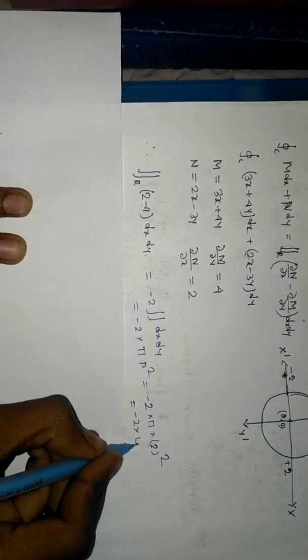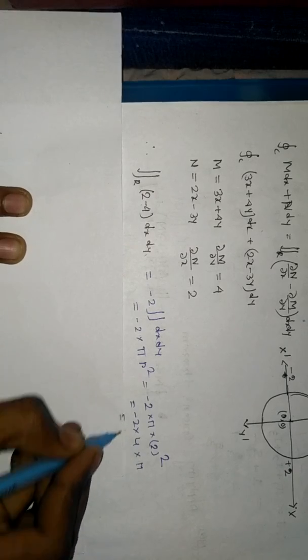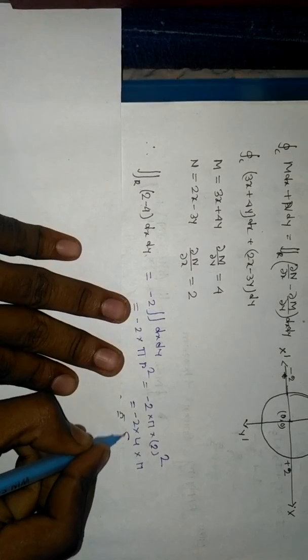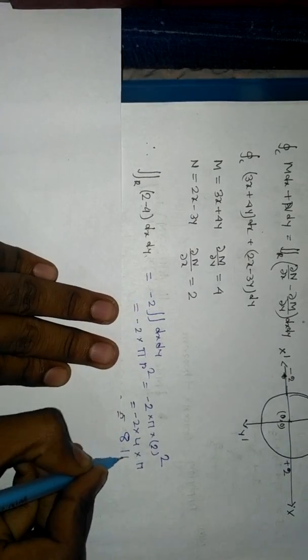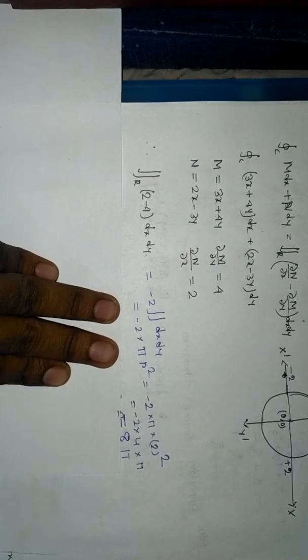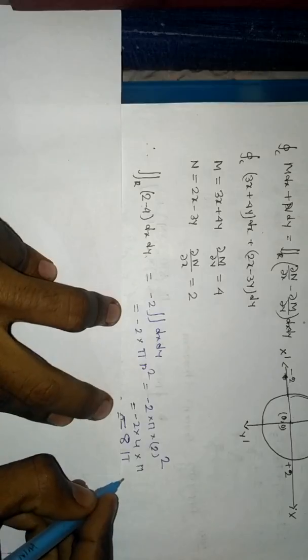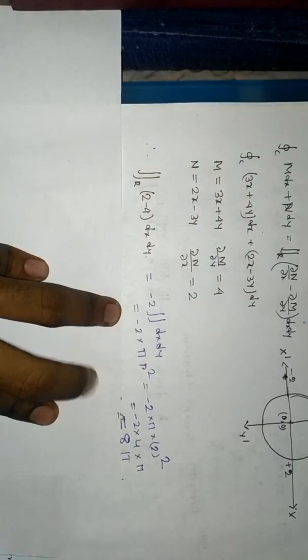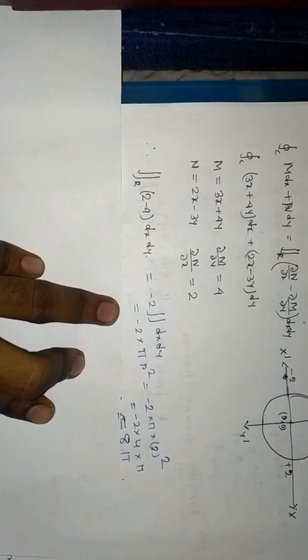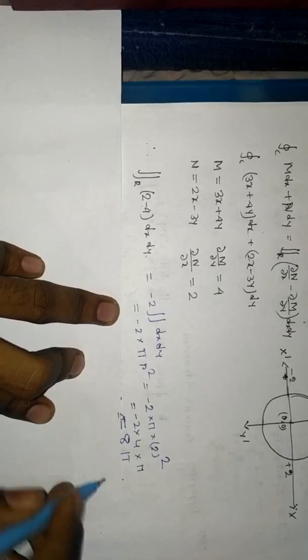Minus 2 times 4 times pi equals minus 8 pi. I think you can understand this. Now it is finished.